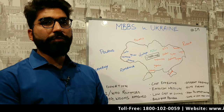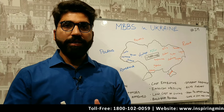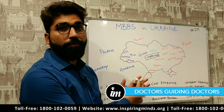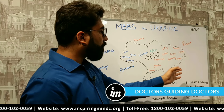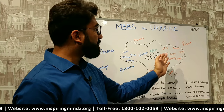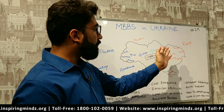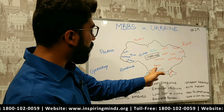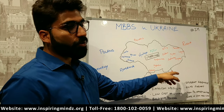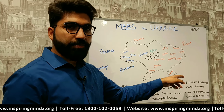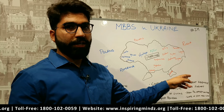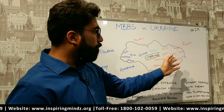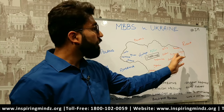Ukraine is divided into 21 administrative divisions. The part near the Russian border includes Kharkiv, Lugansk, Donetsk, Odessa, and Crimea. Crimea was part of Ukraine but was annexed by Russia around 2012–2013 following conflict between Russia and Ukraine. The same situation applies to Donetsk and Lugansk. So before going to Ukraine for medical studies, you should always check where your city is located, as this does matter in the long term.